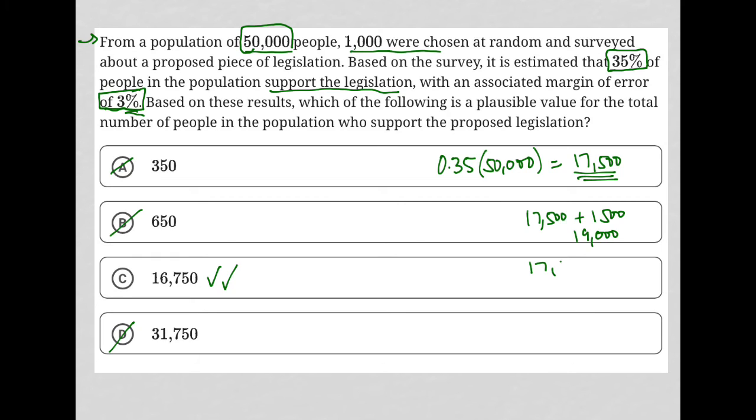So as low as 17,500 minus 1,500, which is 16,000. So there's our range of possibilities, somewhere between 16,000 and 19,000.